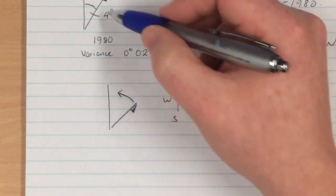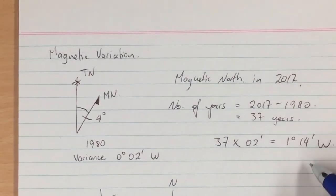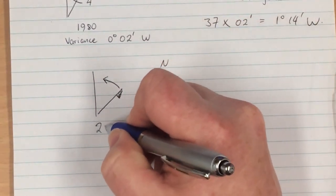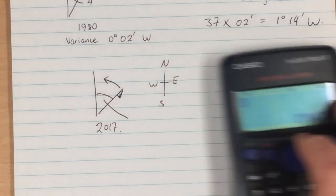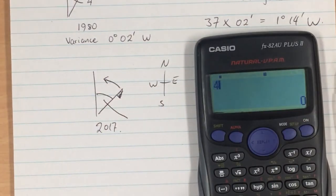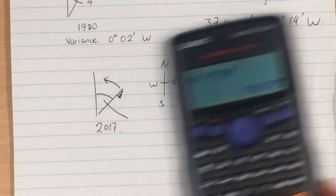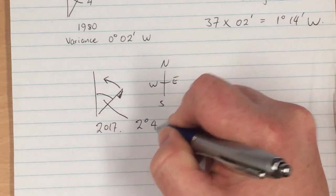in 2017 it will actually have reduced that variance by 1 degree in 14 minutes. So in 2017 that variance will be 4 degrees minus 1 degree in 14 minutes. So it will be 2 degrees in 46 minutes.